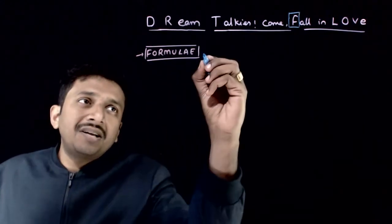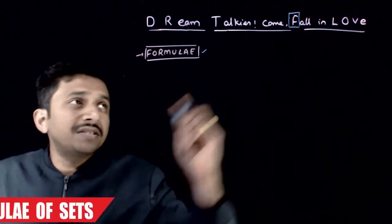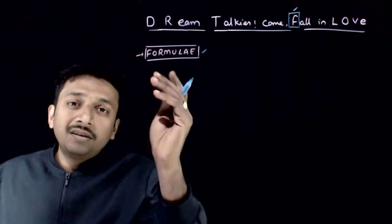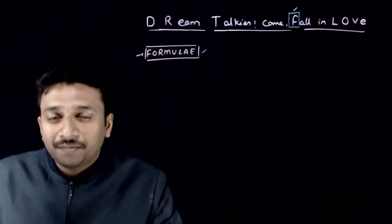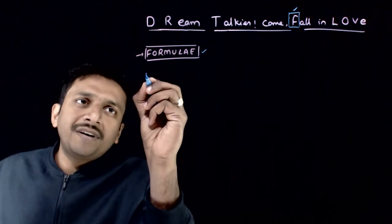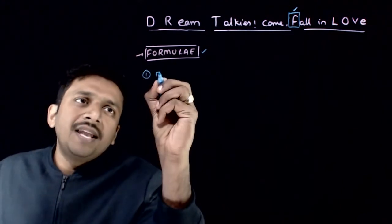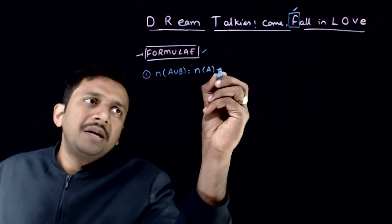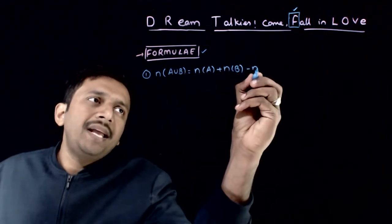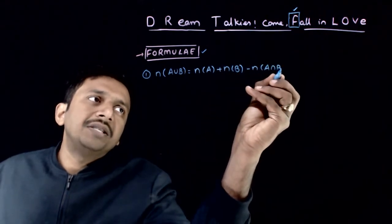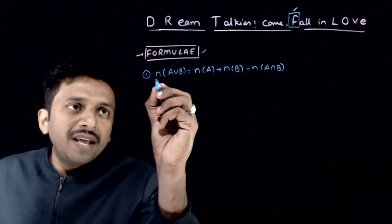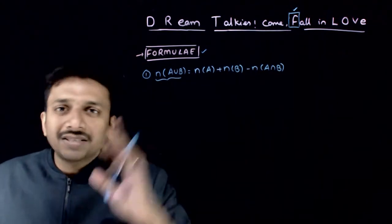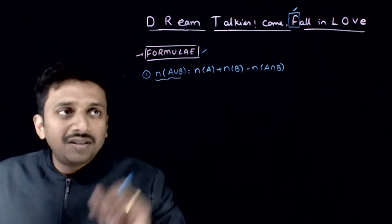Finally, we have reached the final topic which is formulas, which F stands for. This is the most important topic in set theory and this is where most number of questions are asked. The first and most important formula is: the number of elements in A union B is equal to n(A) plus n(B) minus n(A intersection B). This is the most important formula.